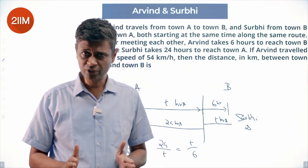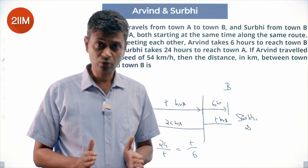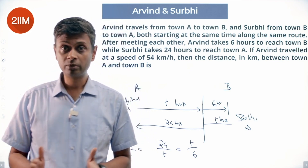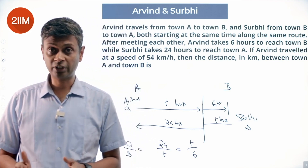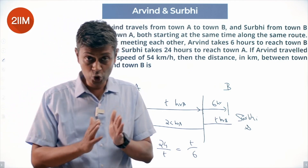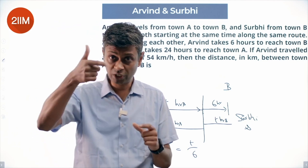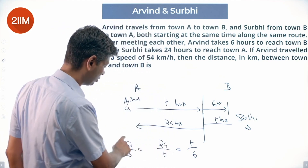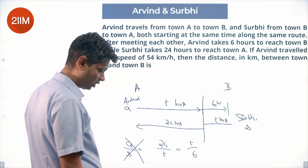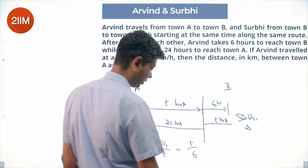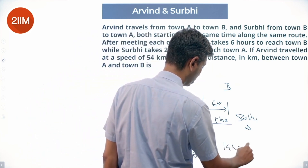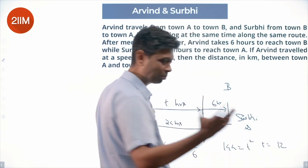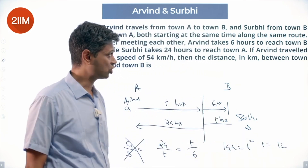For example, if Arvind takes 5 hours for one journey and 4 hours for another, and Arvind takes 10 hours for a third trip, Surbhi takes 8 hours for the second trip — the ratio of their times should be the same, inverse of the ratio of their speeds. So: 24 by T equals T by 6, meaning 24 times 6 equals 144, which equals T squared. Therefore T equals 12.